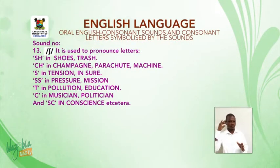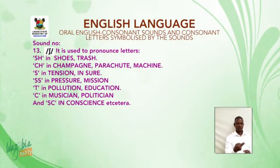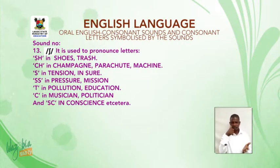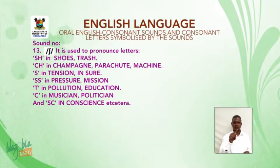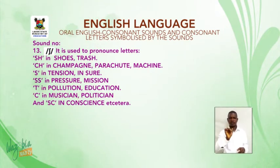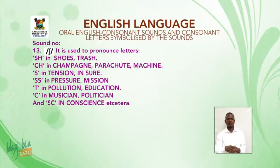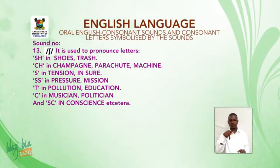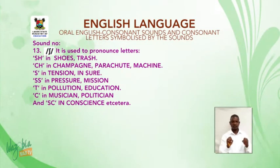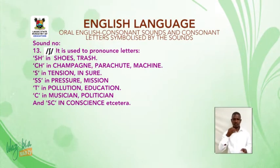Sound number 13: /ʃ/ (SH). It is used to pronounce letters SH in shoes, trash; CH in champagne — not champagne — parachute, machine; S in tension, ensure; SS in pressure, mission; CI in pollution, education; CI in musician, politician; and SC in conscience.